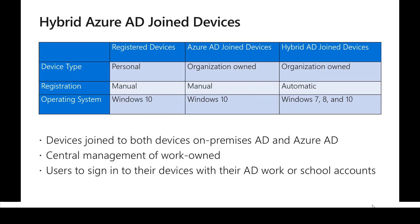Looking at the different categories, there is a registered device category, an Azure AD Join capability, and a Hybrid AD Join capability. Hybrid AD Join supports different Windows versions like Windows 7, 8, and 10, whereas the other two support only Windows 10 devices. Azure AD Join and Hybrid AD Join are normally managed by the organization.